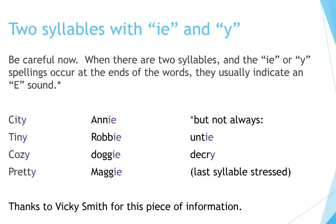Two syllables with I-E and Y — be careful now. When there are two syllables and the I-E or Y spellings occur at the ends of words, they usually indicate an E sound. For example: city, tiny, cozy, pretty, Annie, Robbie, doggy, Maggie. But not always — for example: untie, decry. Notice that the last syllable is stressed. Thanks to Vicki Smith for this piece of information.